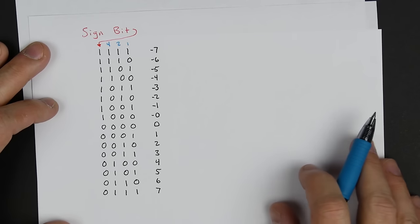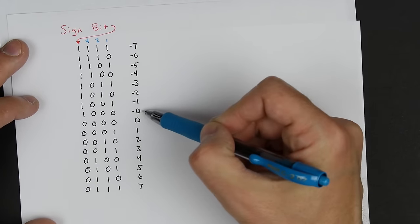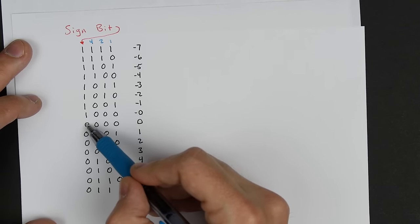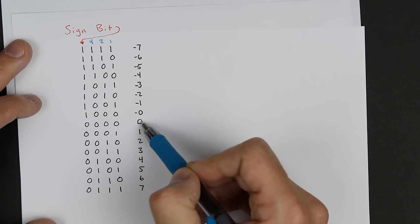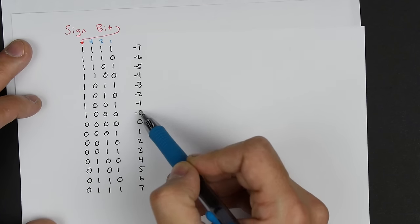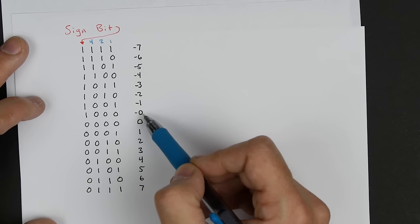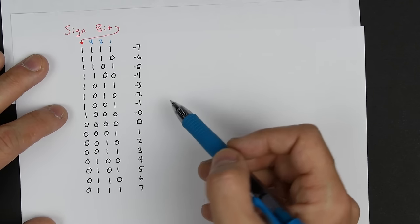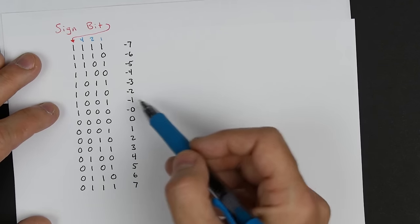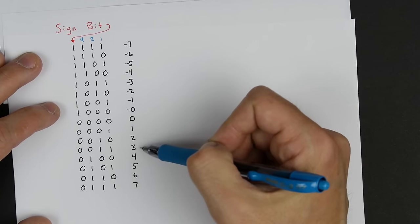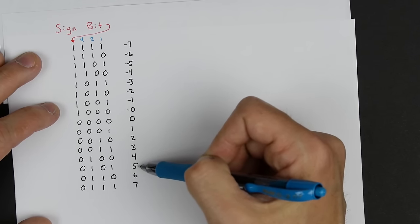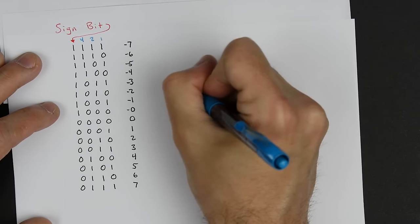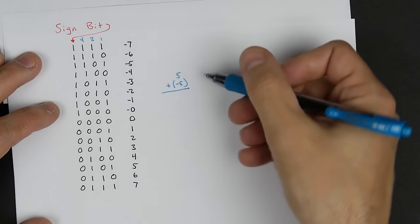A couple of weird things about this. One is that you'll notice there's a negative 0, because you can have 0, 0, 0 and it can either have a 0 or a 1 in the sign bit place. So there's a difference between 0 and negative 0, which is kind of weird. The other inconvenience is if you try to add these things together, things get kind of weird. If we want to add 5 and negative 5, you'd expect to get 0.